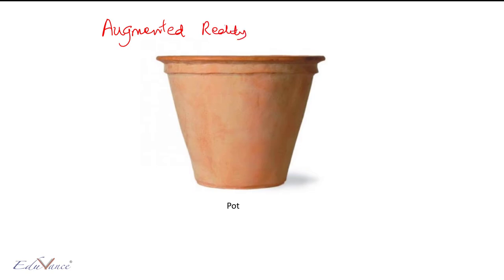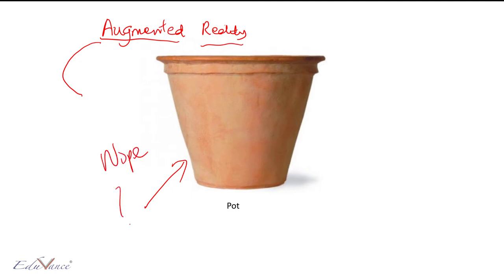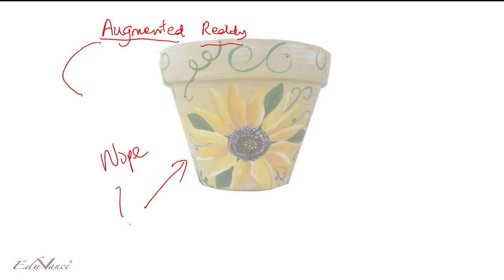The word augmented reality comes from two words: augmented and reality. First let us look at the word augmented. Let's say you have this pot — is this pot looking good? Nope. What if I paint this pot and make it look beautiful, something like this — does it look good? Yes.